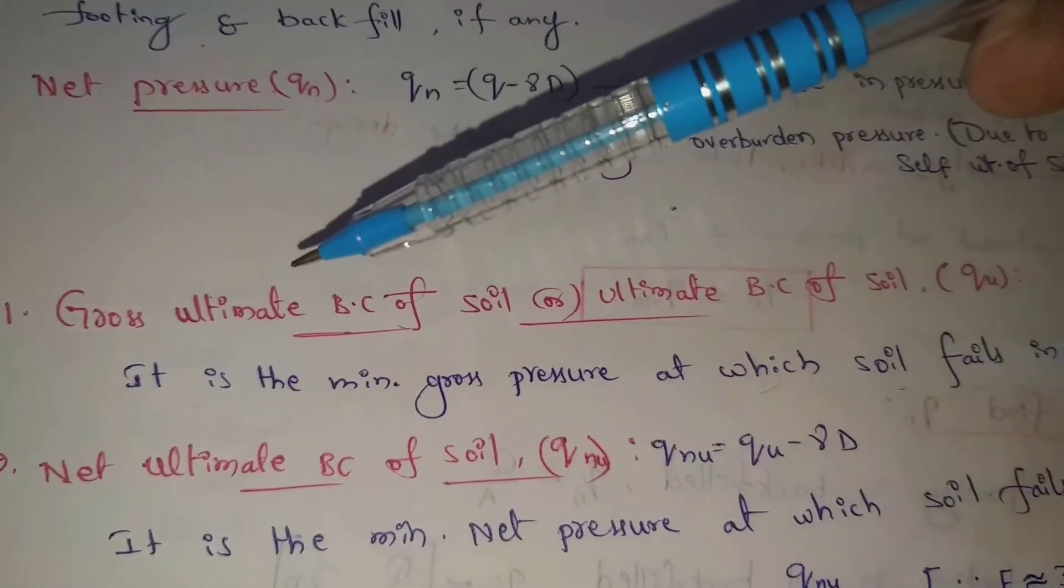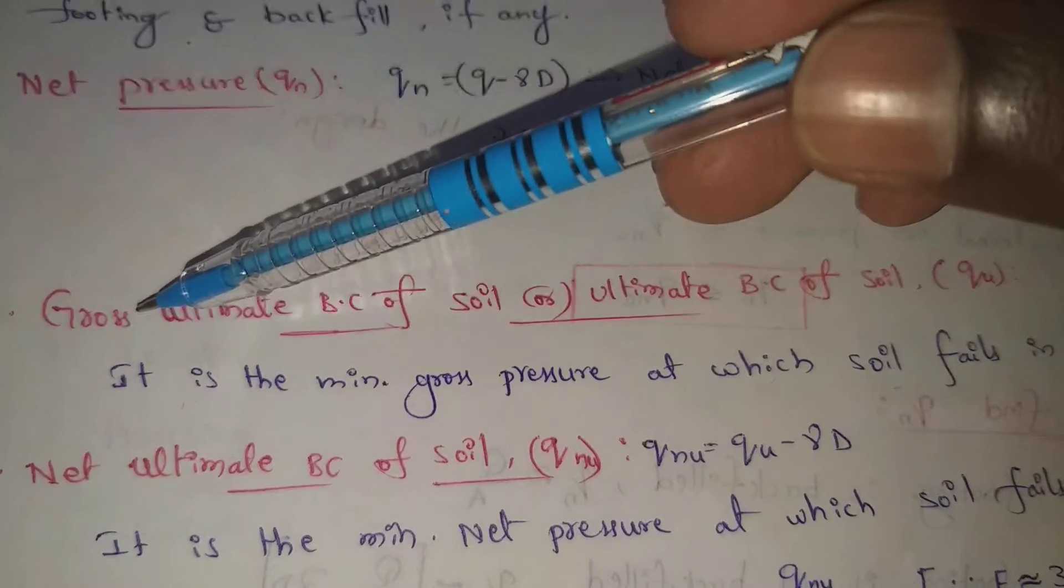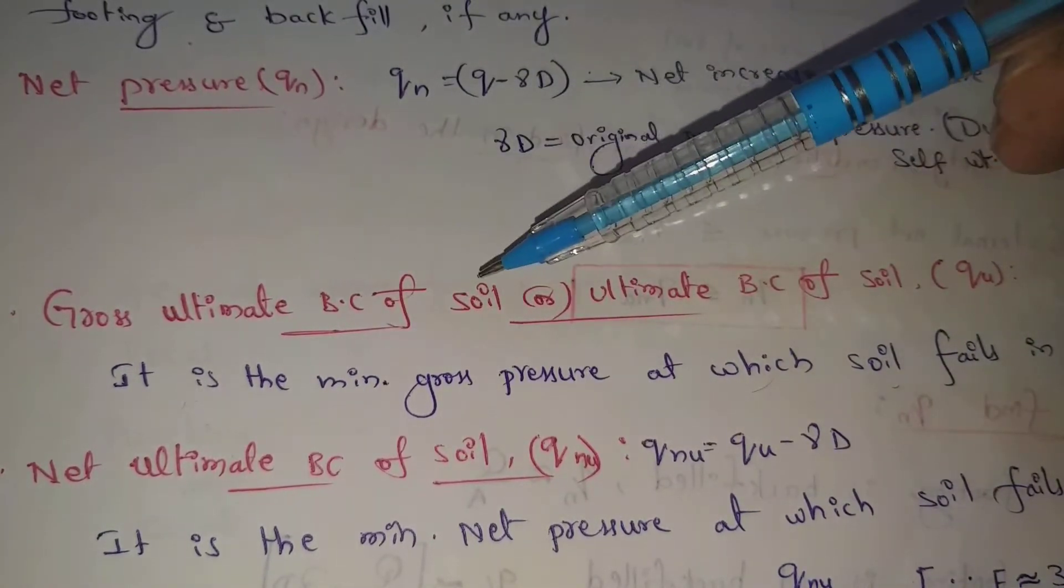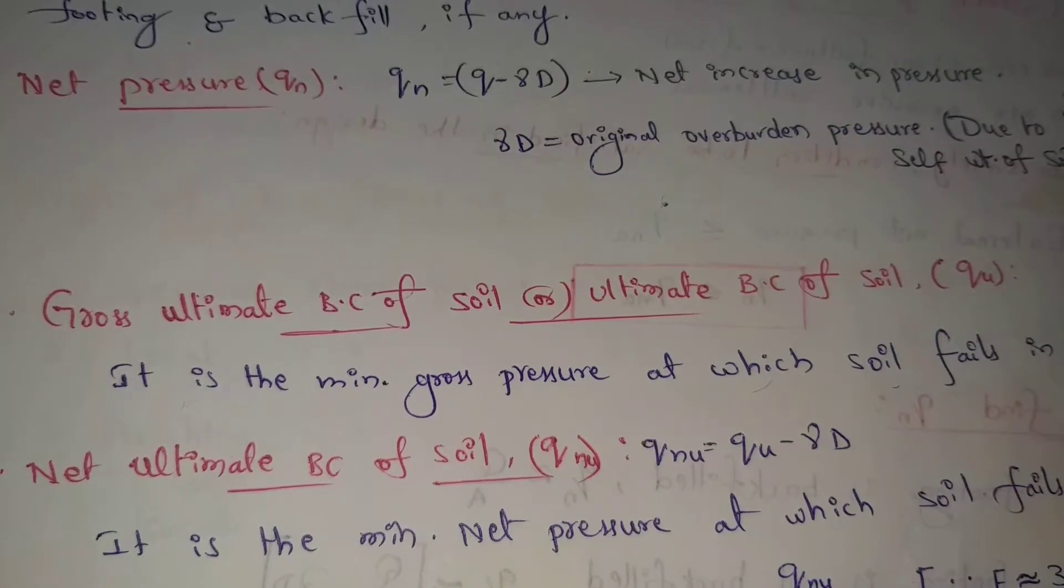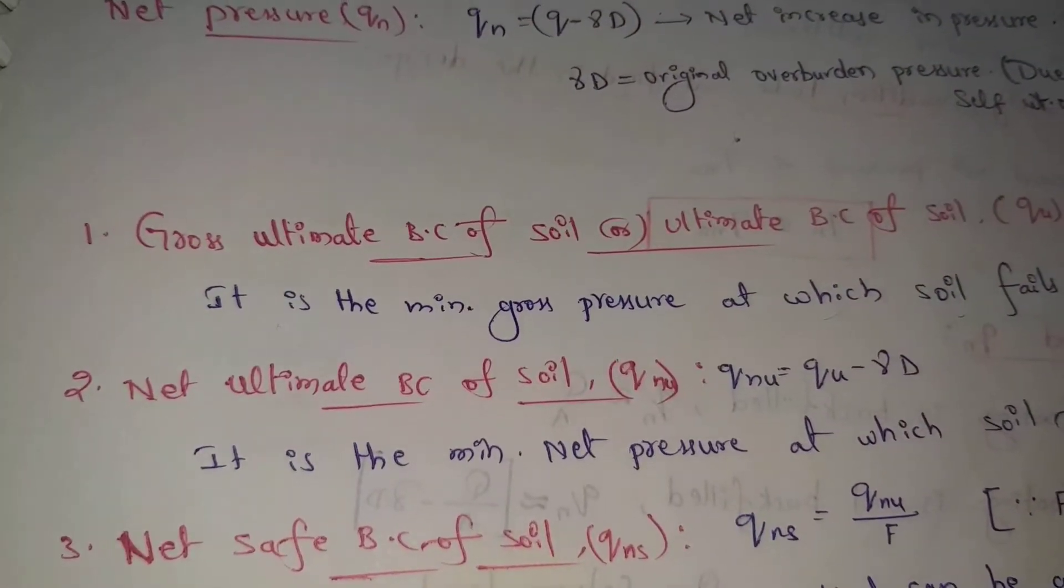Here, Gross Ultimate Bearing Capacity. Small q and gross pressure small q, gross pressure. Small u I can have to do ultimate bearing capacity of soil. Simple, I can have to do this. Small q. That is our ultimate bearing capacity of soil.